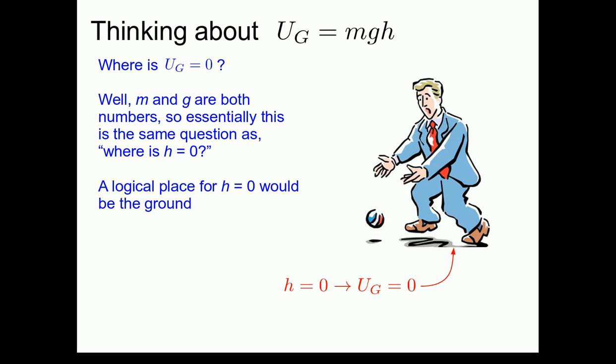Well, a logical place you might think for h to be equal to zero would be the ground. We define the ground to be h equals zero, then the gravitational potential energy on the ground, UG, is going to be zero when the ball is on the ground.